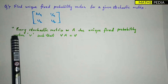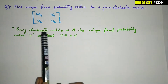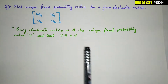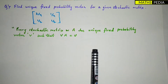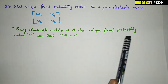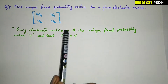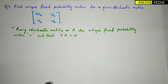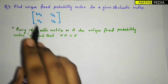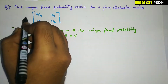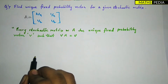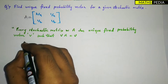The key statement to remember is that every stochastic matrix A — you can also denote it as P — has a unique fixed probability vector V such that V times A is equal to V. We are going to find this unique fixed probability vector for the given matrix.